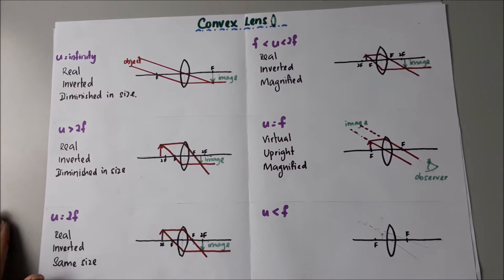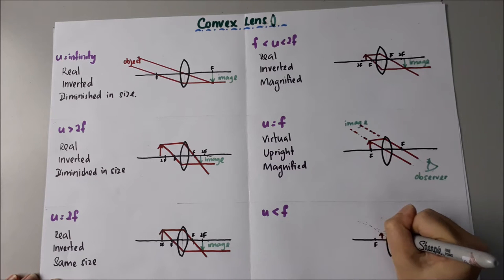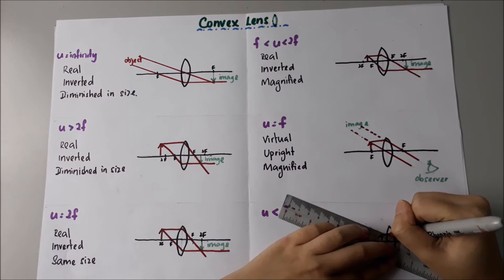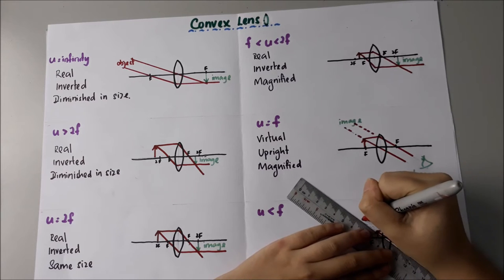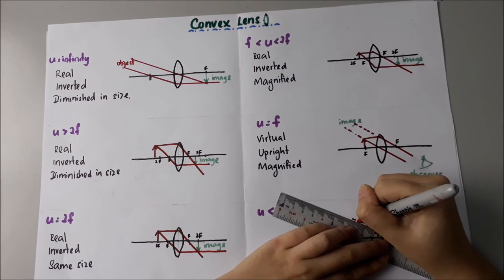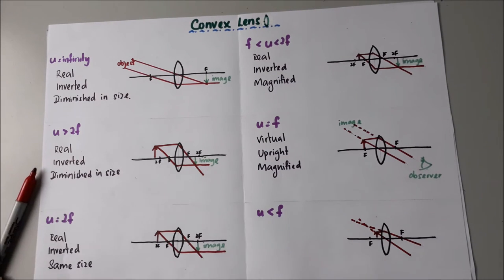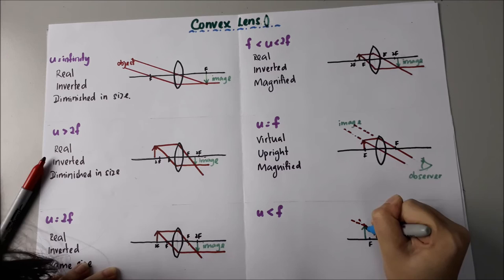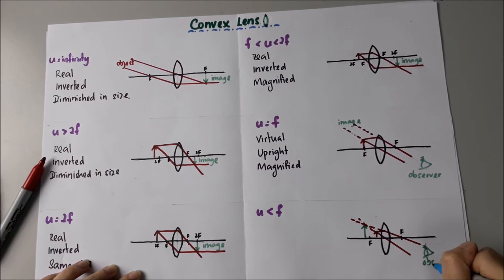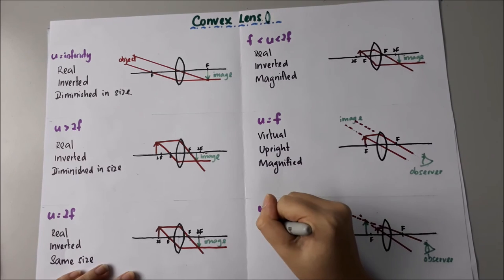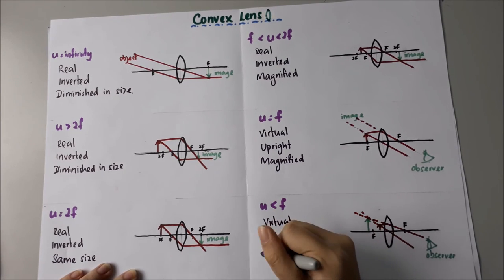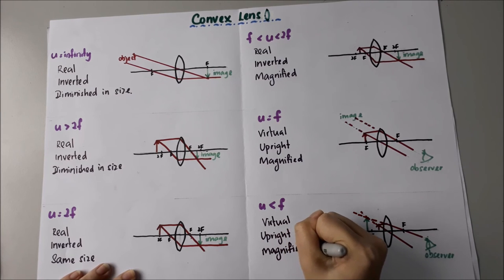Now let's see the last one, when the object is smaller than F. We can now get the image here from the observer's eyes. The image is virtual, upright, and magnified.